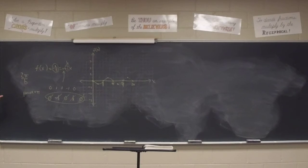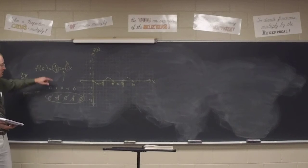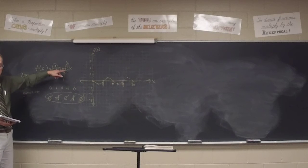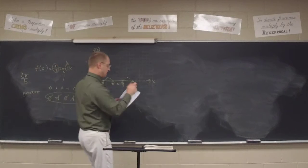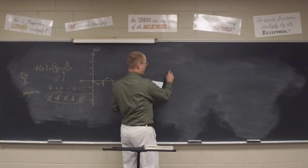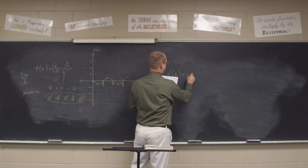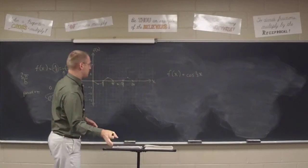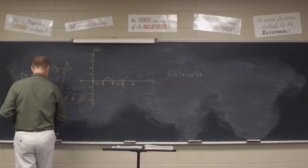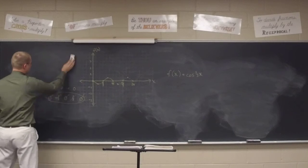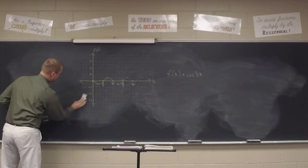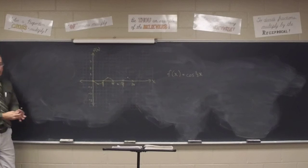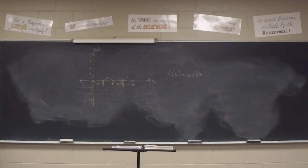Any questions on this? One student went to two pi but forgot to change the period — they did the negative half correctly but missed the period change. Let's do another one using the same graph from your homework: f of x equals the cosine of two-thirds x.